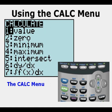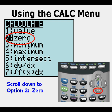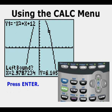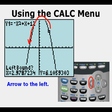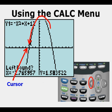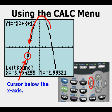Here is the calc menu again that we get by pressing second, then trace. Scroll down to option two, zero. Press enter. Left bound is being asked. Arrow to the left past the other side of the y axis. Here the cursor is almost to the x axis on the other side. Now after continuing to arrow to the left, the cursor is below the x axis. Press enter.